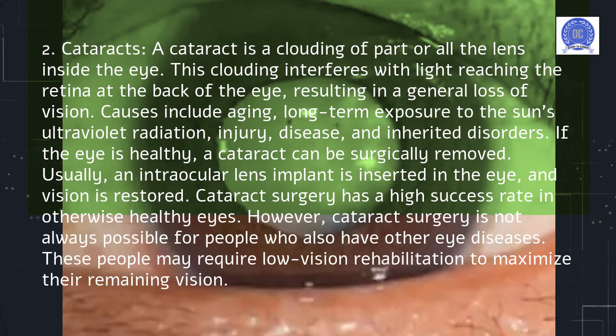If the eye is healthy, a cataract can be surgically removed. Usually, an intraocular lens implant is inserted in the eye, and vision is restored. Cataract surgery has a high success rate in otherwise healthy eyes. However, cataract surgery is not always possible for people who also have other eye diseases. These people may require low vision rehabilitation to maximize their remaining vision.